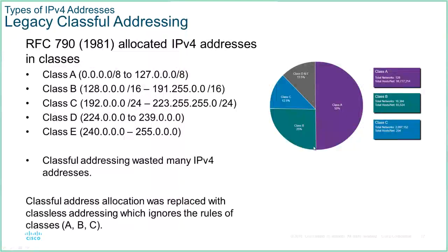The next portion was class B, which was another 16,000-odd networks and each of those networks could have 65,000 hosts. Then class C was the last of our usable networks for production, rounding out to a 2 million network count, with each network having basically 250 hosts.